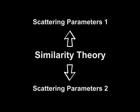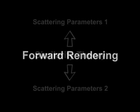In this paper, we present a theoretical analysis of this theory, providing fundamental insights into the structure of the material parameter space. Our main application is to speed up forward rendering of translucent media.